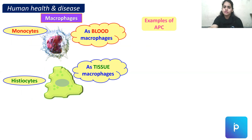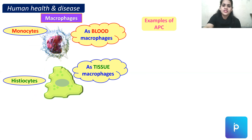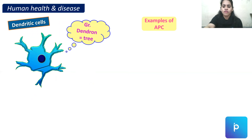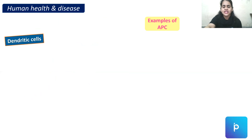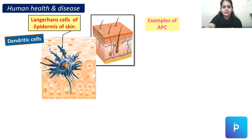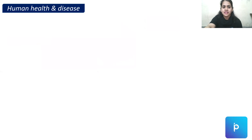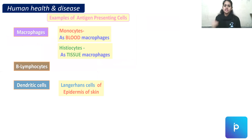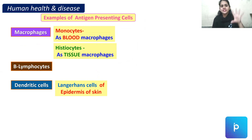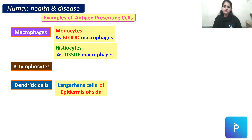Examples of antigen presenting cells include macrophages — in blood these are monocytes, and in tissues these are histiocytes. Other examples include B lymphocytes and dendritic cells of the skin, which are called Langerhans cells of the epidermis. So antigen presenting cells include monocytes, histiocytes, B lymphocytes, and dendritic Langerhans cells.